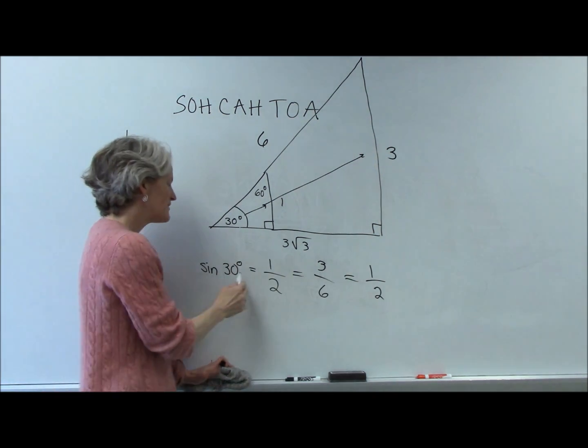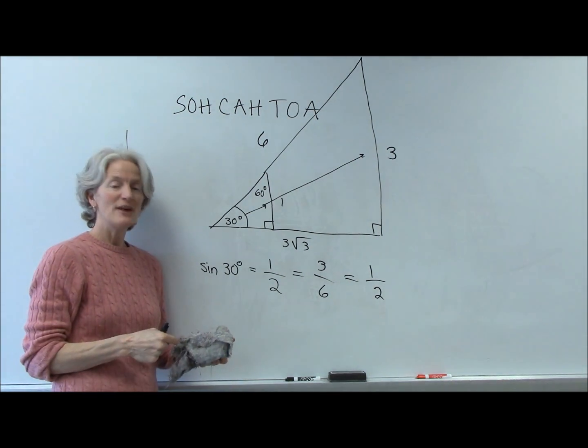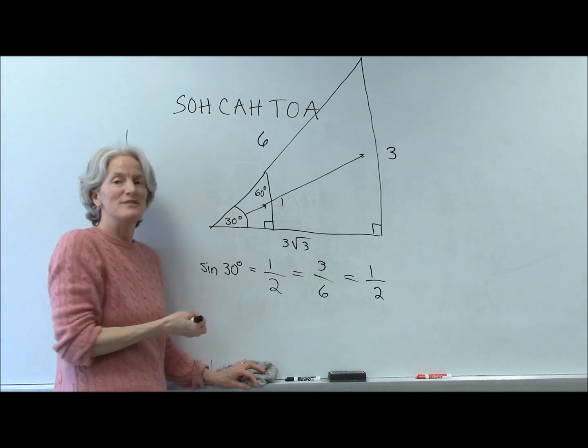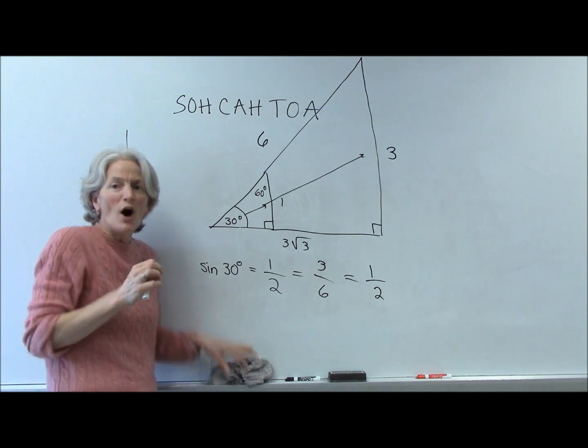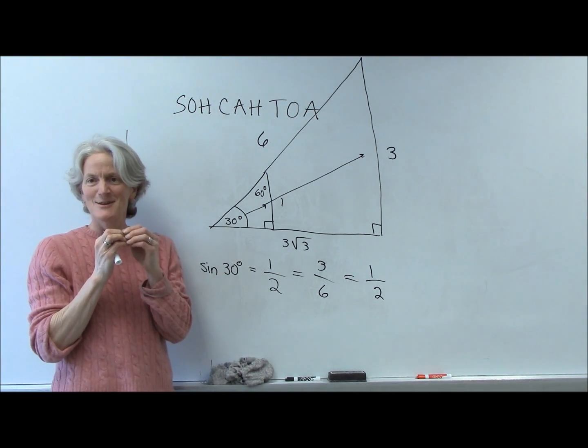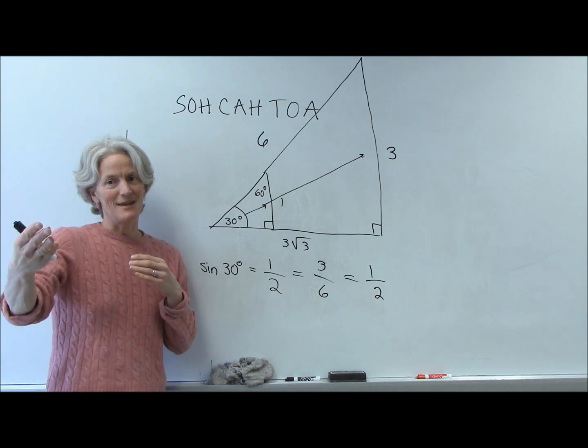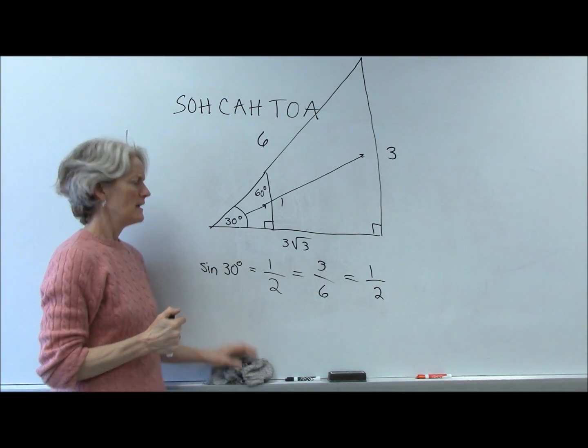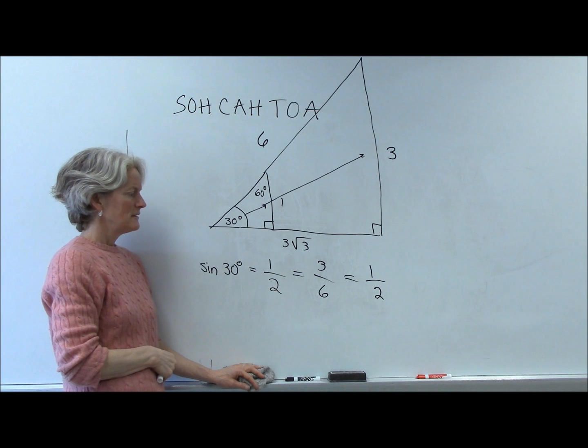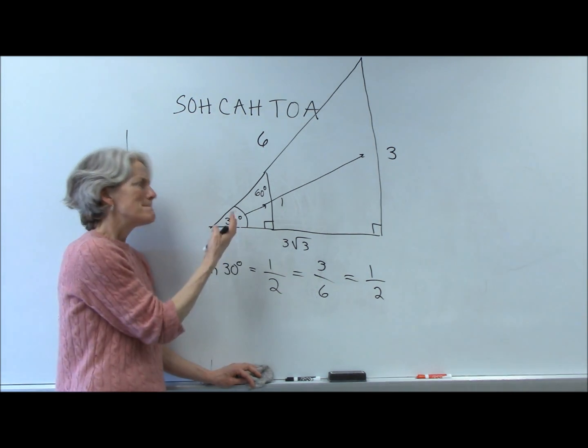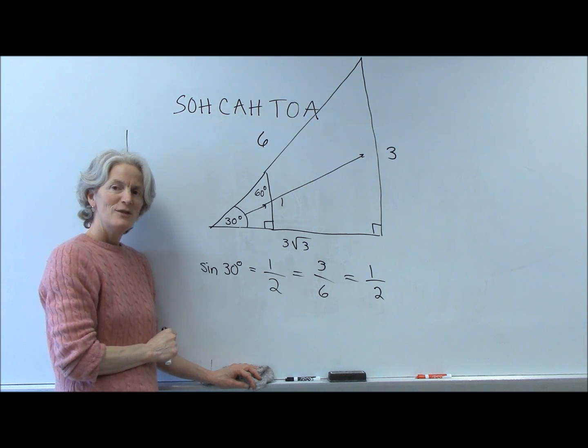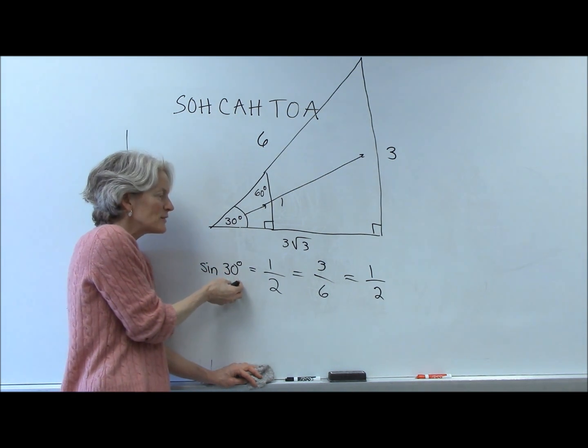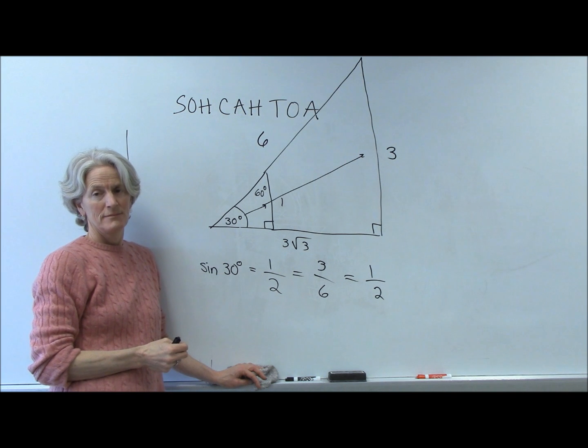So when you put sine of 30 in your calculator, the calculator is actually not really doing a calculation. It's actually looking at a pre-programmed list of measurements that have actually been physically measured at some time. Those trig tables were all measured by humans. In my day, we had those trig tables at the back of our textbooks. Because the sine of 30 degrees in any triangle is 0.5 or one-half. The opposite side divided by the hypotenuse is always a half. So this is a very powerful tool that allows us to relate angles with lengths of sides. Very powerful.